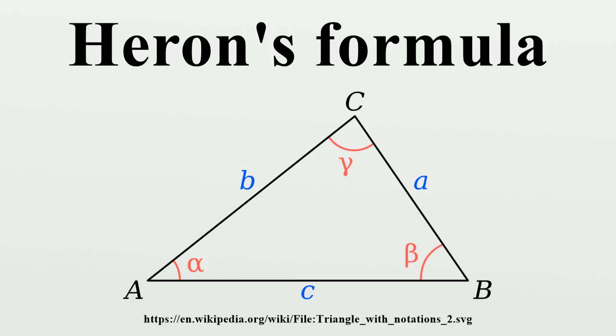Heron's original proof made use of cyclic quadrilaterals, while other arguments appeal to trigonometry or to the incenter and one excircle of the triangle.